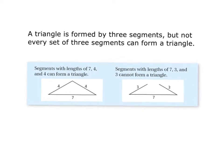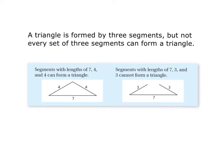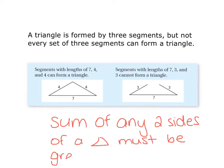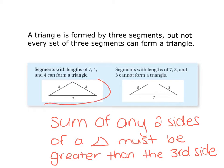The last topic in this section is the triangle inequality. A triangle is formed by three segments, but not every set of three segments can form a triangle. The rule is that the sum of any two sides of a triangle must be greater than the third side. For example, with sides 4, 4, and 7: 4 plus 7 is 11, bigger than 4; and 4 plus 4 is 8, which is bigger than 7 — so this forms a triangle.